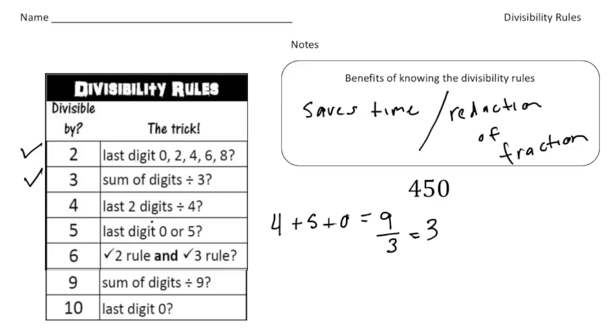The number 4. The way to do is you have to focus on the last two digits. So 50. And if 4 can go in 50 evenly, you know 4 can go into 450. And 4 cannot go into 50 evenly, so 4 is not a factor. The rule for 5, that's an easy one. If it ends in a 0 or 5, 5 is a factor. And this ends in a 0, so that's the case.